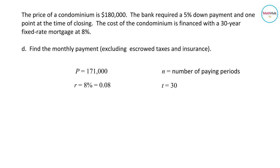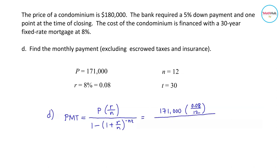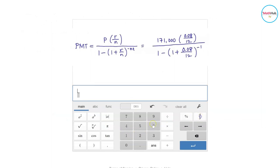0.08 divided by 12, where N is 12 for monthly payment. 1 minus 1 plus 0.08 over 12 raised to negative 12 times 30.